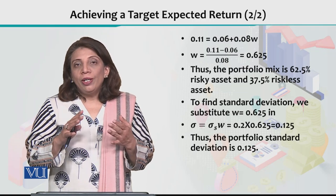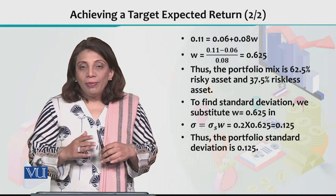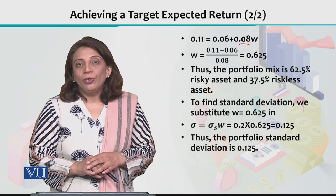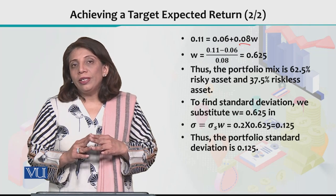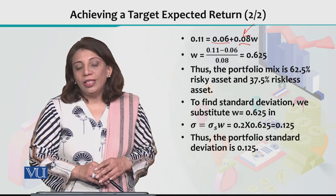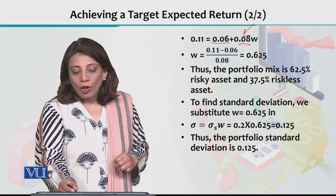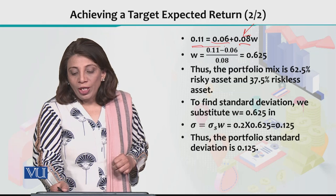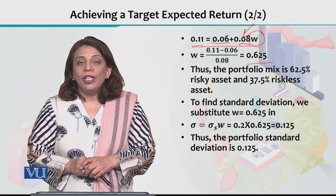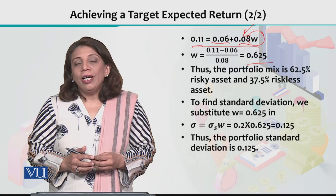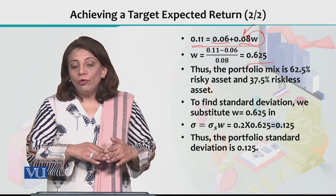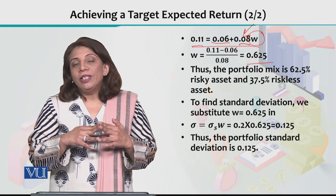For that matter, we have plugged in the information: the risk premium — risky asset minus risk-free asset — is given as 0.08. The risk-free asset return in this example is 6%. We want to generate an 11% expected rate of return. Solving the equation for W gives W equals 0.625.